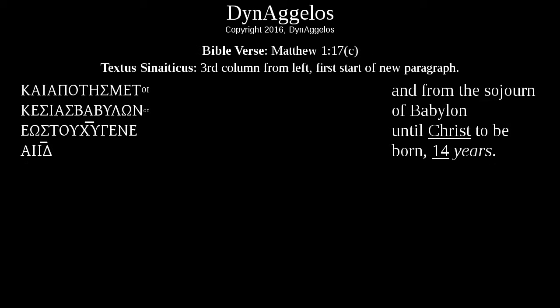Now let's move to Matthew chapter 1, verse 17 — specifically the third section of verse 17. If you look in Codex Sinaiticus, it will be in the third column from the left, at the start of a new paragraph. Not at the top of the column — scroll down just a little bit and there will be a break marking a new paragraph. You'll notice that there are only two letter combinations that are actually shortened in this passage.